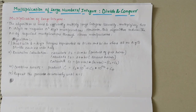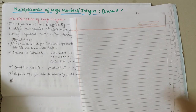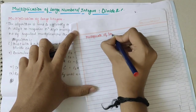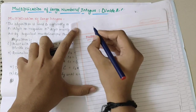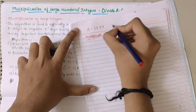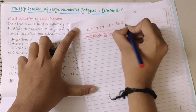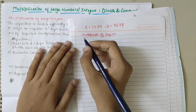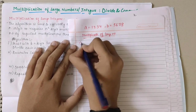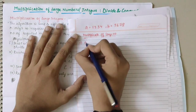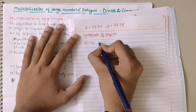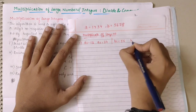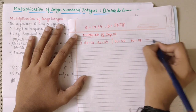Let's solve a problem to understand how it works. We are using multiplication of large numbers. I have two numbers: A is 1234 and B is 5678. In order to multiply these, the first step is to split the given numbers into equal parts. So splitting A, I get a1 as 12 and a0 as 34. Similarly for B, b1 is 56 and b0 is 78.